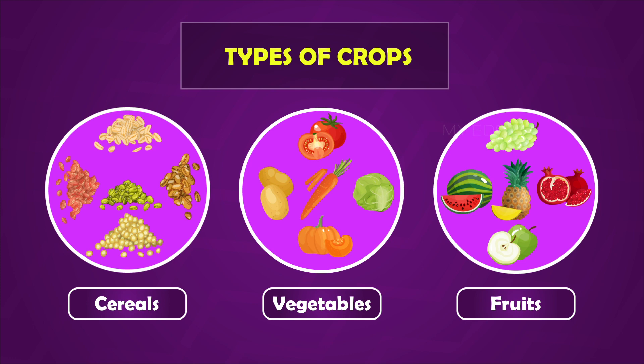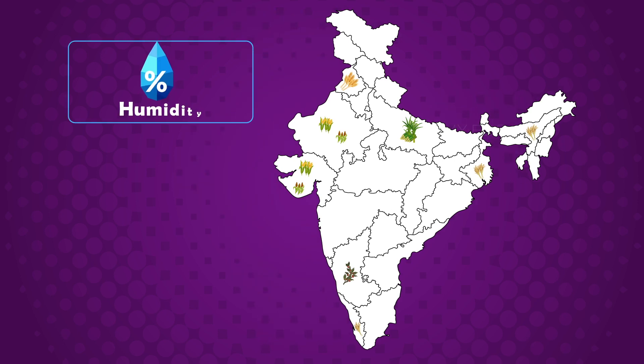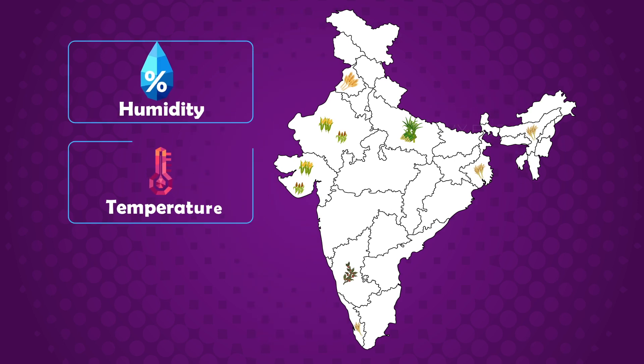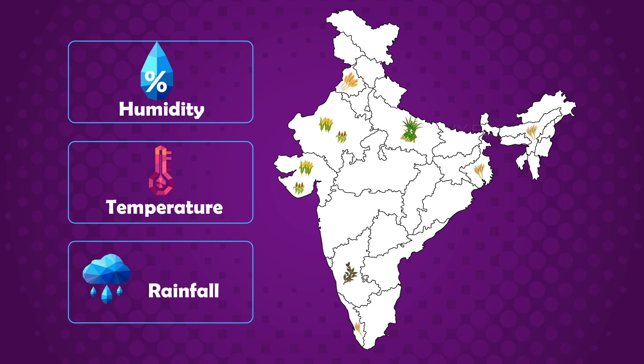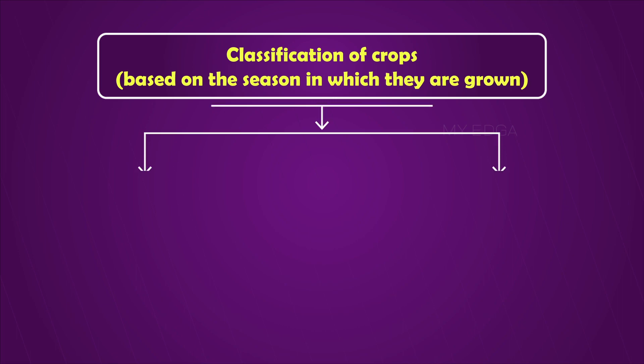In India, a variety of crops can be grown in different regions as climatic conditions like humidity, temperature, and rainfall vary from one region to another. But mainly there are two broad cropping patterns in India: Kharif crops and Rabi crops.